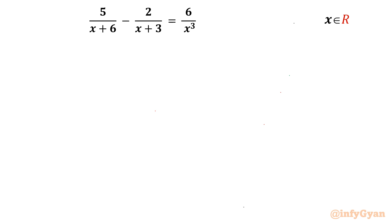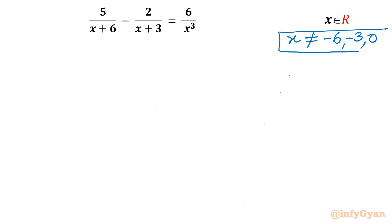I will begin with writing the domain of the equation. You can see x+6 in the denominator, x+3 in the denominator, and x³ in the denominator. So as per our consideration, x cannot be equal to negative 6, negative 3, and 0. These solutions will be exempted if they appear in the solution.